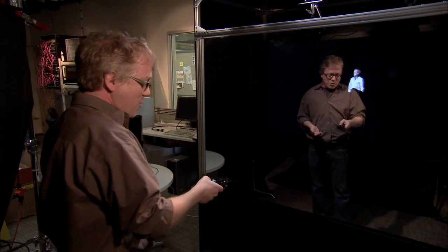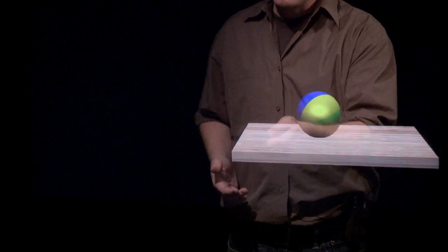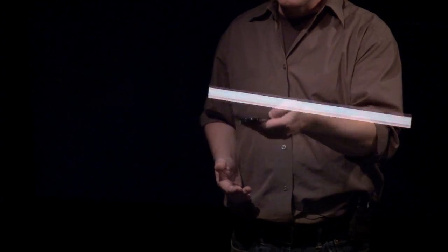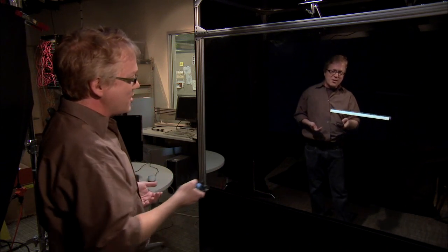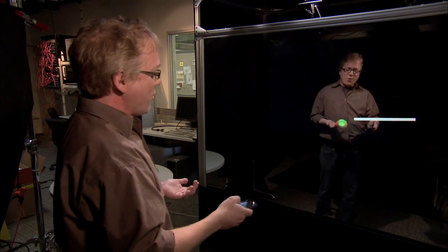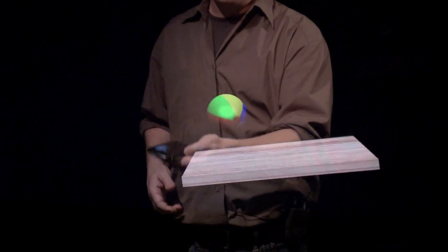As another example of what we can do to combine the phone with the Holoflector, we have this wooden paddle that we're rendering. One nice thing about using the phone is that we get the orientation data from the phone, and we're also using the position data from Kinect.